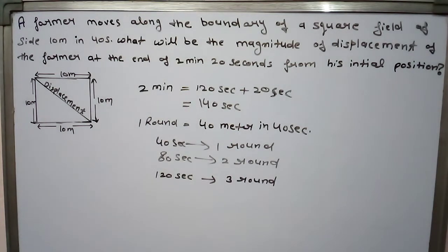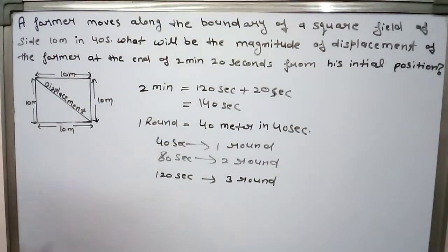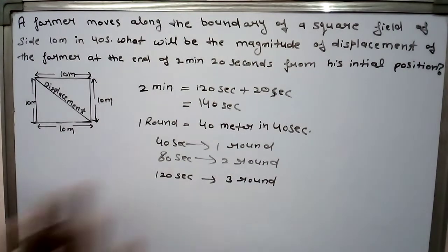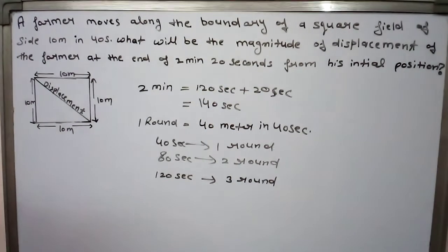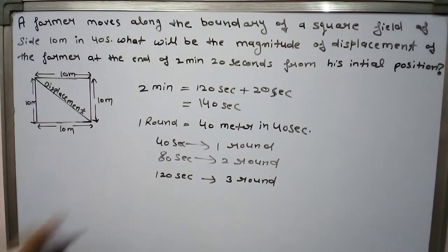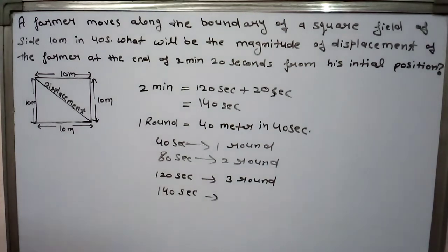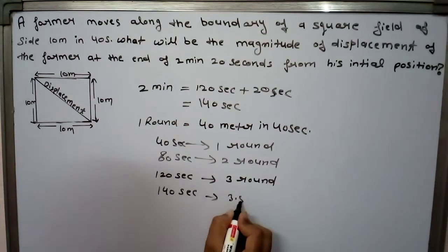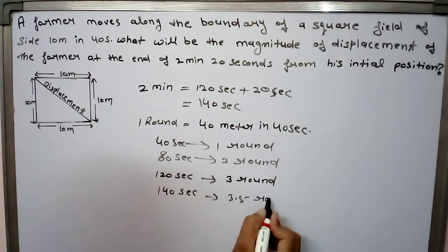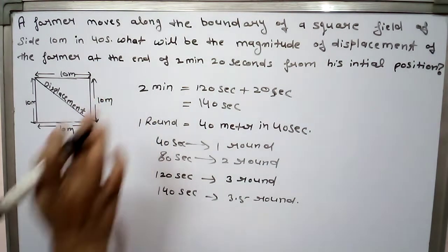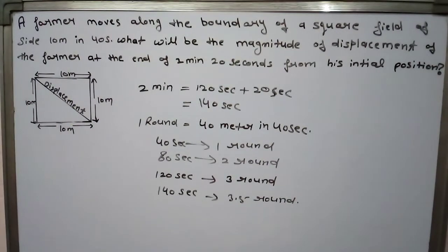And we will add 40 seconds. We are doing 140 seconds total, so we will go half way. We have completed 3 rounds and now we are at 3.5 rounds. It is clear that after 2 minutes 20 seconds, the farmer is at the opposite corner. Now we have to find this displacement.